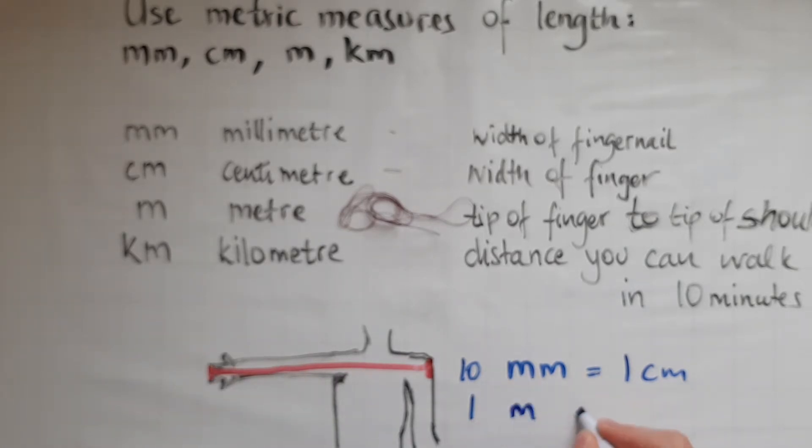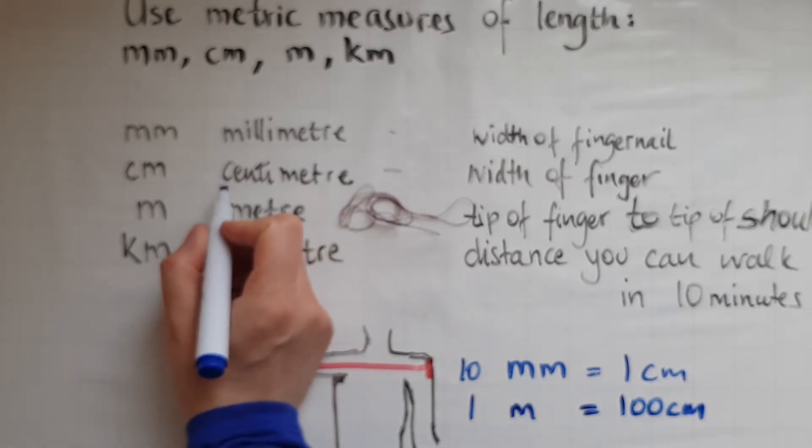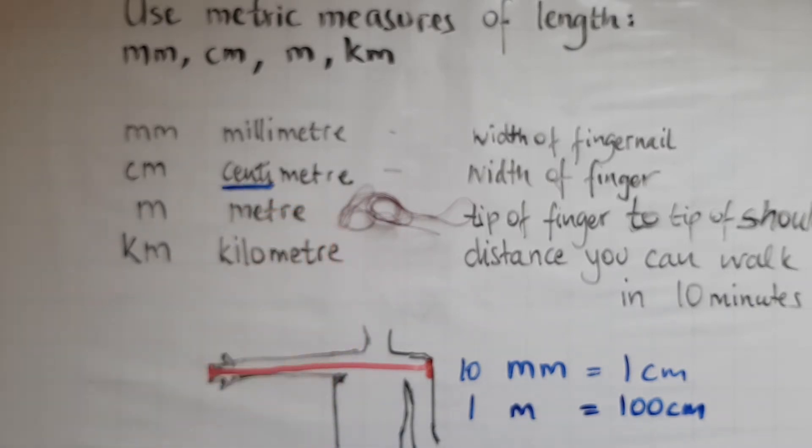So one meter is equal to a hundred centimeters. A clue for that is also the prefix centi, which is like a century and there are a hundred years in a century, or cents in a euro - there are a hundred cents in a euro. So that helps you remember as well.